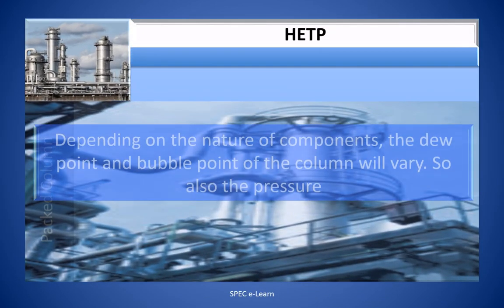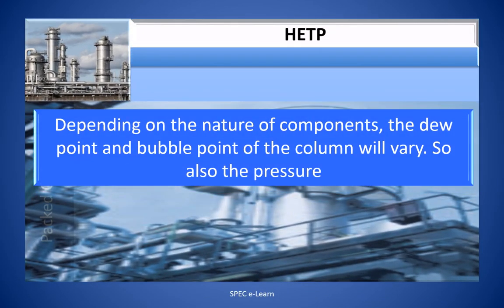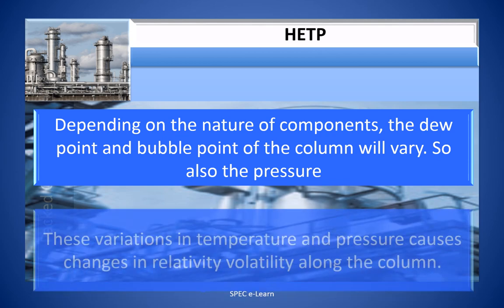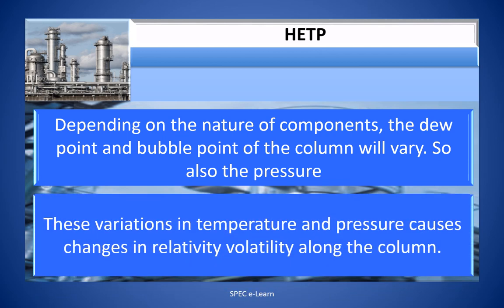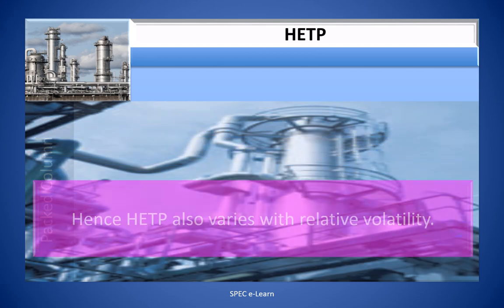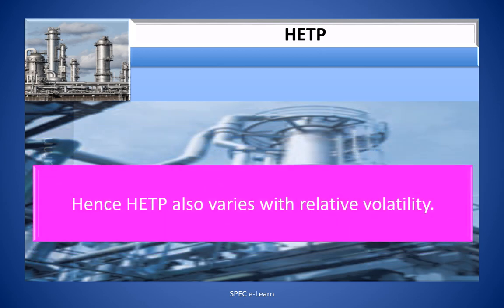Depending on the nature of components, the dew point and bubble point of the column will vary, and so also the pressure. These variations in temperature and pressure cause changes in relative volatility along the column. Hence, HETP also varies with relative volatility.